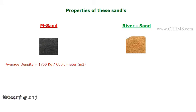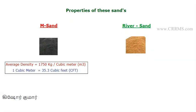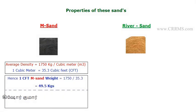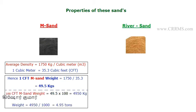Density is very important when you calculate the CFT, tonnage, or kilograms. The average density of M sand is 1750 kg per cubic meter (m³). One cubic meter equals 35.3 cubic feet. The density of M sand varies around 1700 to 1750. So for one CFT of M sand: 1750 divided by 35.3 equals approximately 49.5 kg, varying around 45.5 to 49.5 kg.